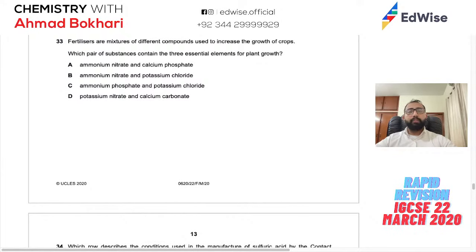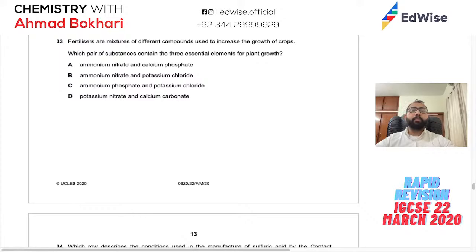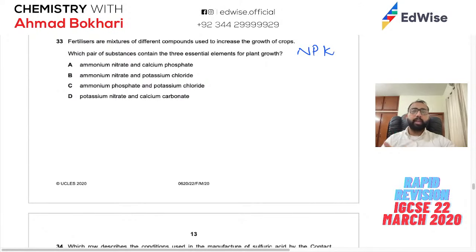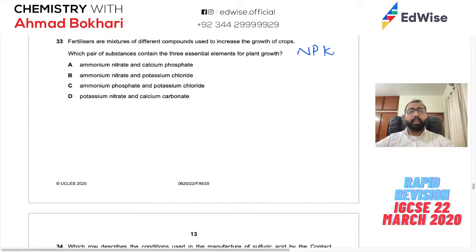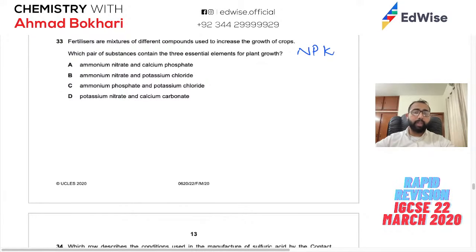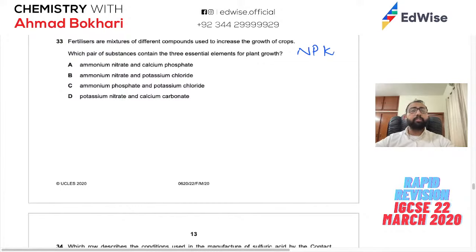Question 35: Fertilizers contain NPK — nitrogen, phosphorus, potassium. Which pair of fertilizers provides all three? Ammonium nitrate has nitrogen; calcium phosphate has phosphorus but no potassium. Ammonium nitrate plus potassium chloride gives N and K but no phosphorus. Ammonium phosphate provides nitrogen and phosphorus; potassium chloride provides potassium — together all three are covered. Answer: C.